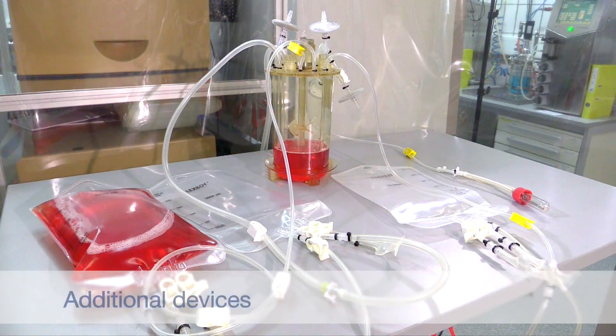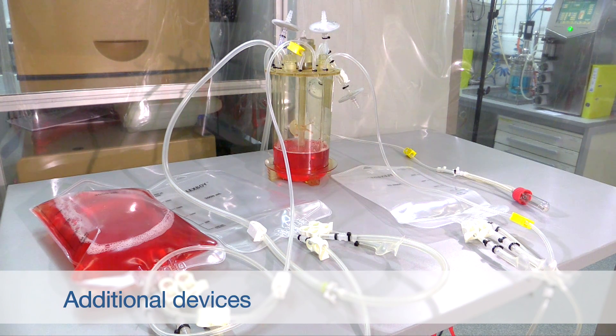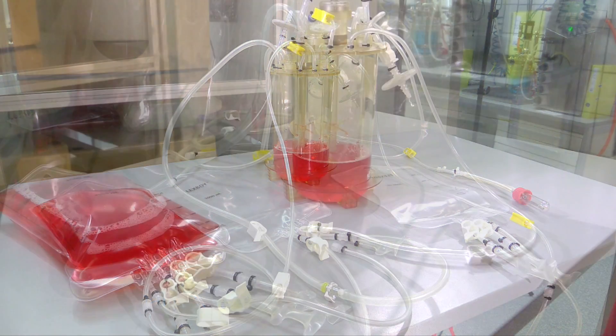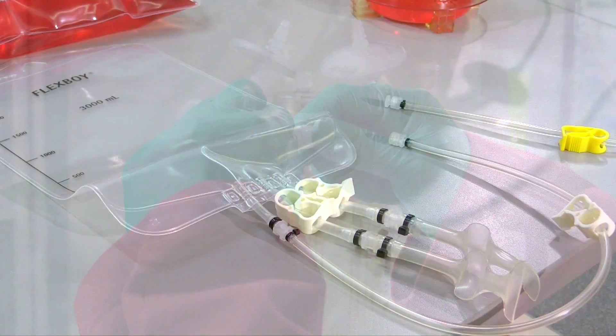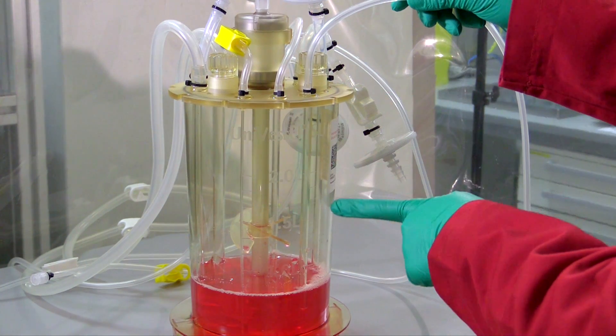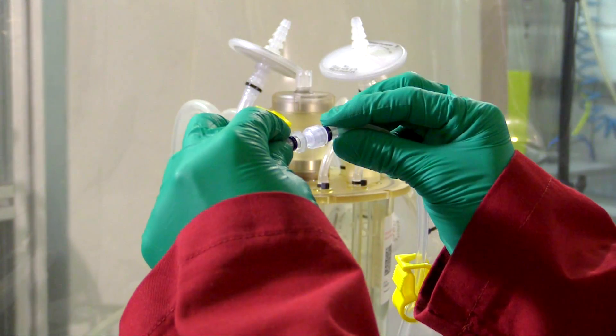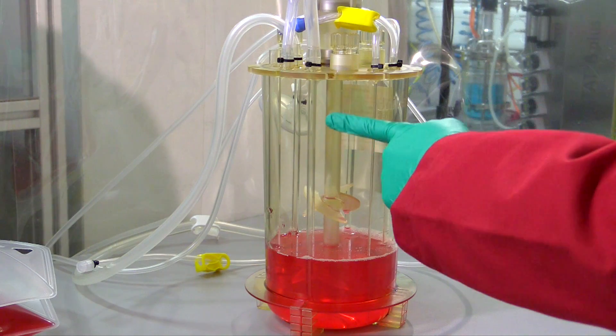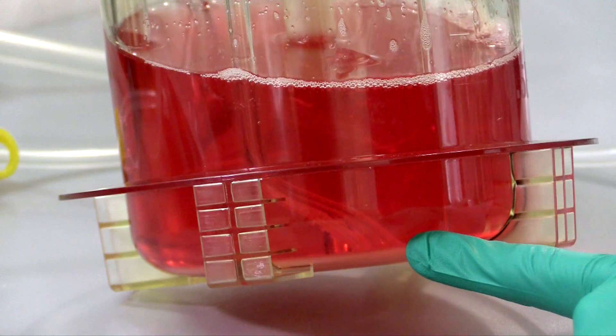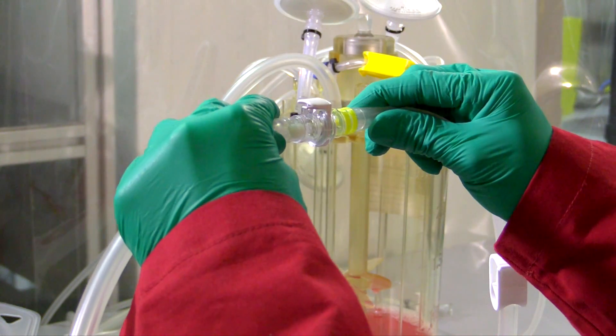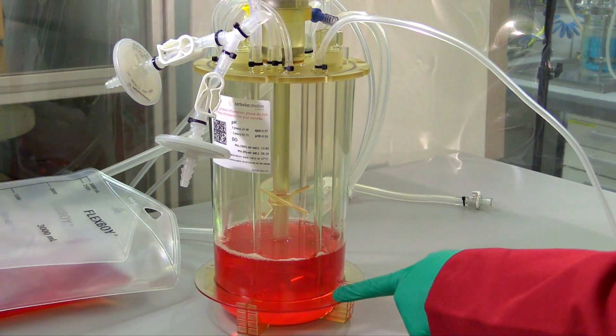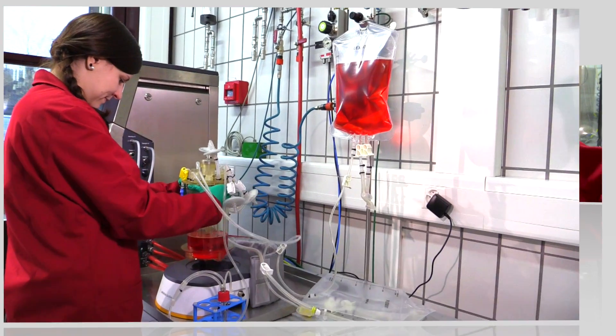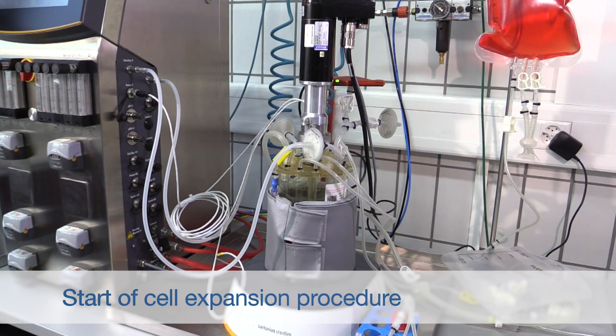Before linking the bioreactor with the control unit, several important additional devices need to be connected to the bioreactor. These are the medium bag with 2 liters cell culture medium, the waste bag, the harvest bag, and the external sampling device. The bioreactor is then placed in the universal holder next to the control unit and connected to it.